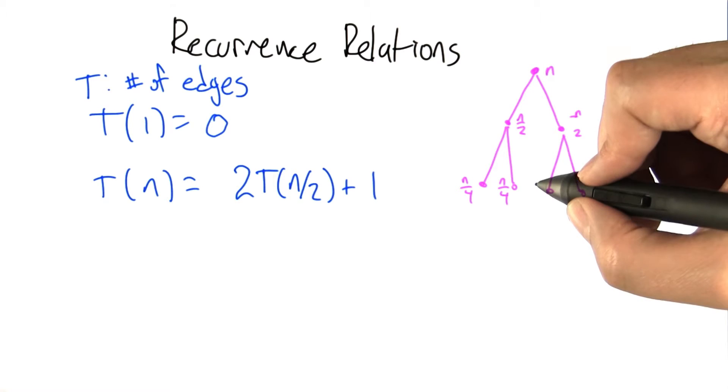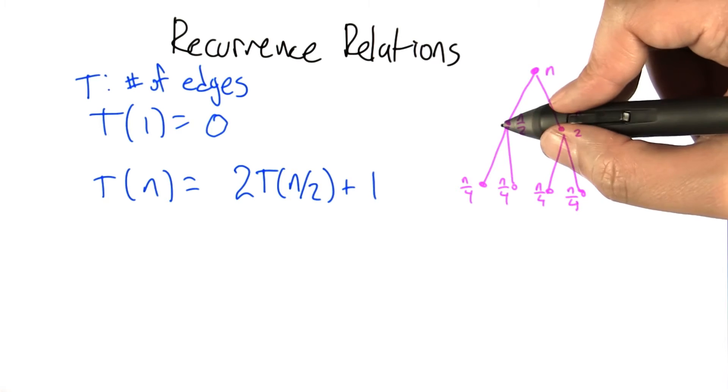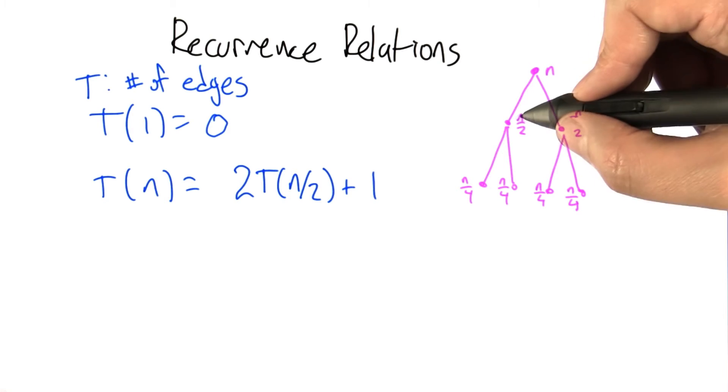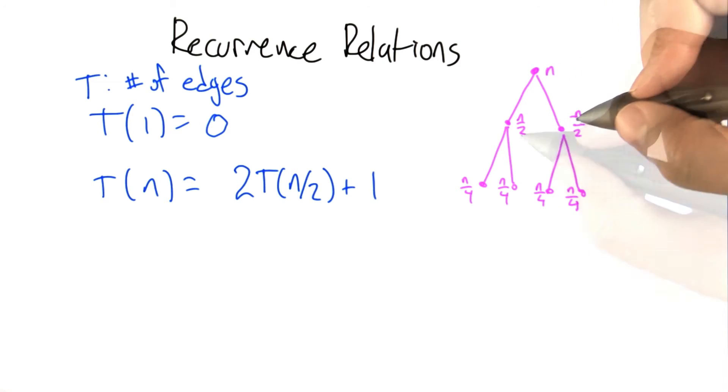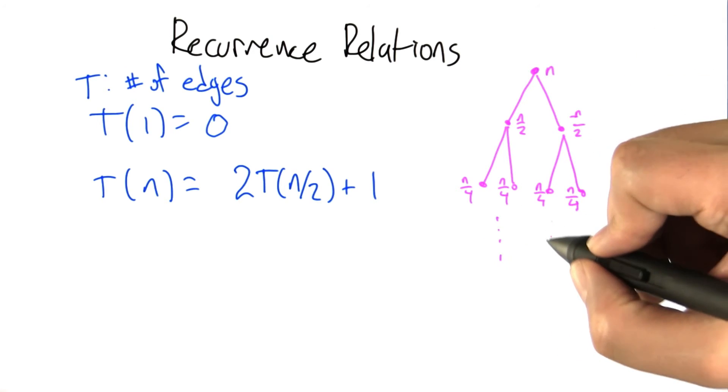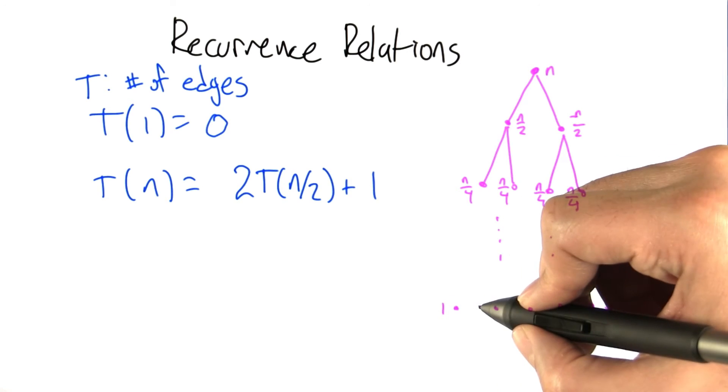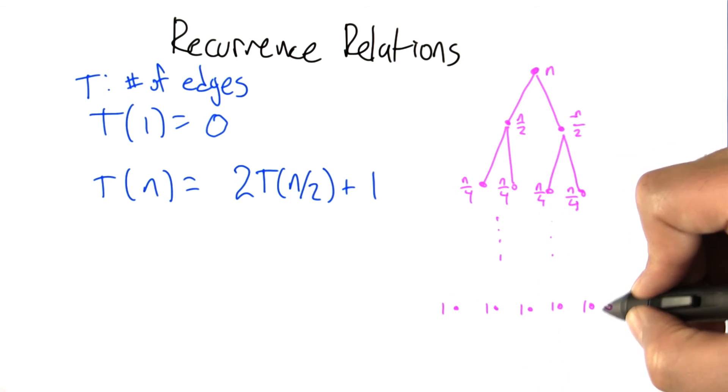You can think of what happens as this process unfolds is that to generate a graph with n nodes, it first breaks that subproblem into two things where we work out the number of edges in a graph with n over 2 nodes, but doing that requires working it out for n over 4 nodes and so on. This goes on and on until we get down to a whole bunch of individual graphs, each of which has one node. That's where the recursion bottoms out.